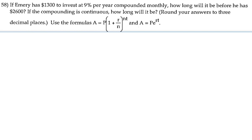For number 58, we're going to solve the word problem, and here we have two formulas that we're going to use. If Emery has $1,300 to invest at 9% per year compounded monthly, how long will it be before he has $2,600?